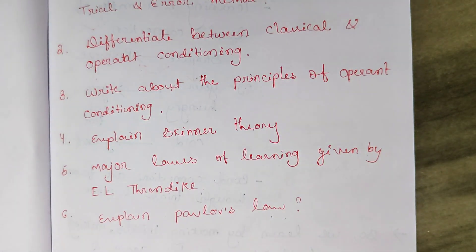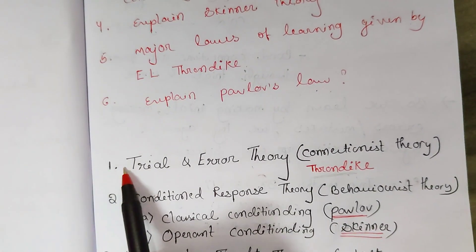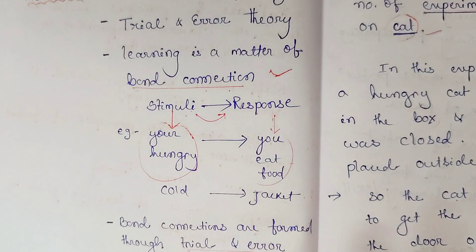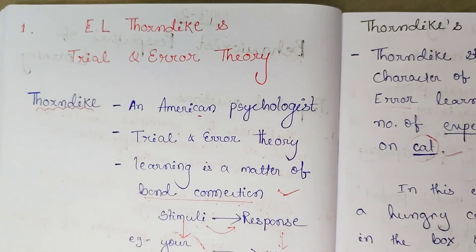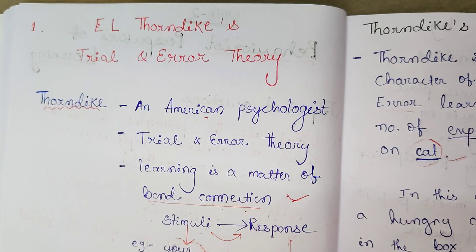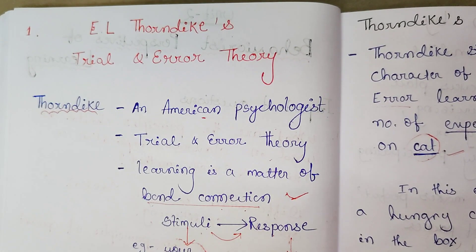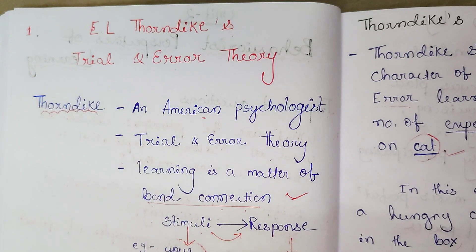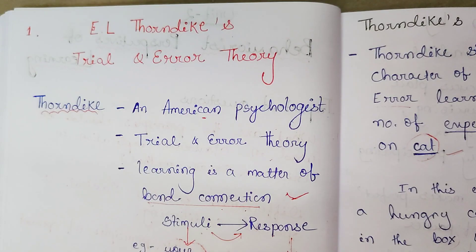Let's start with the first question: Trial and Error Theory. What do you mean by trial and error? Please comment what you understand. We are trying to solve a problem, but we are unable to solve it — we fail. So we try again, fail again, try again. After so many trials, we will get success. This is the trial and error method.